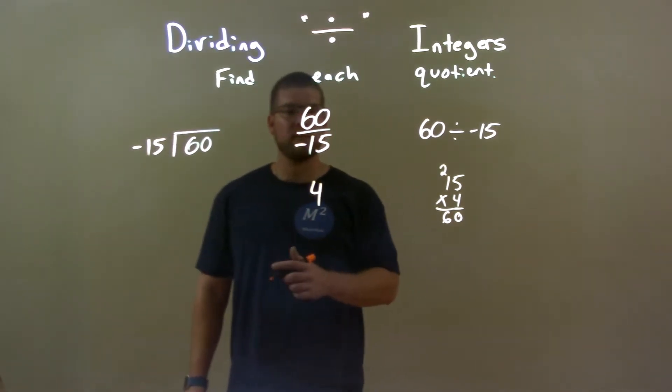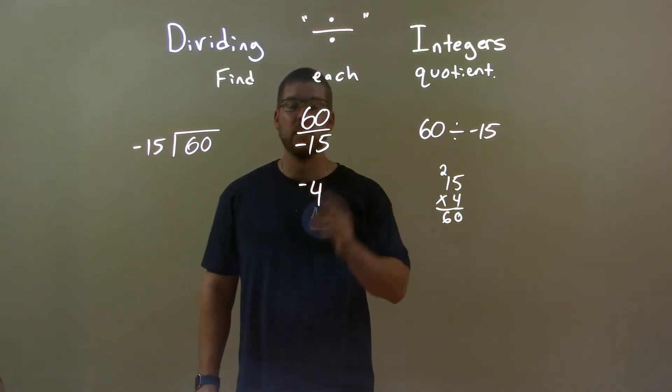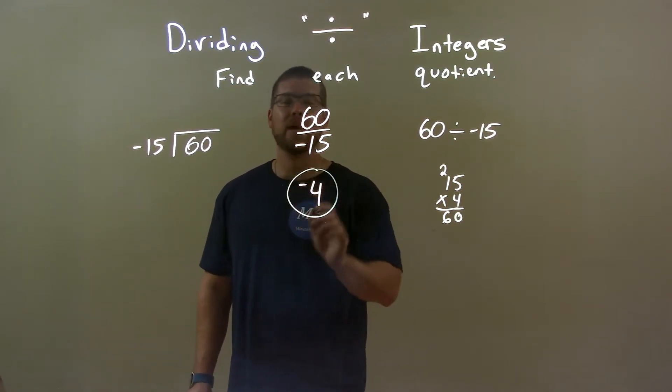But now we have to deal with the negative. A positive divided by a negative is always going to be a negative. So our final answer is a negative 4.